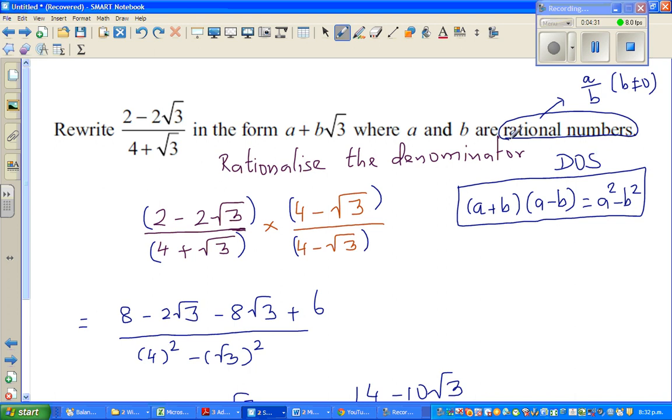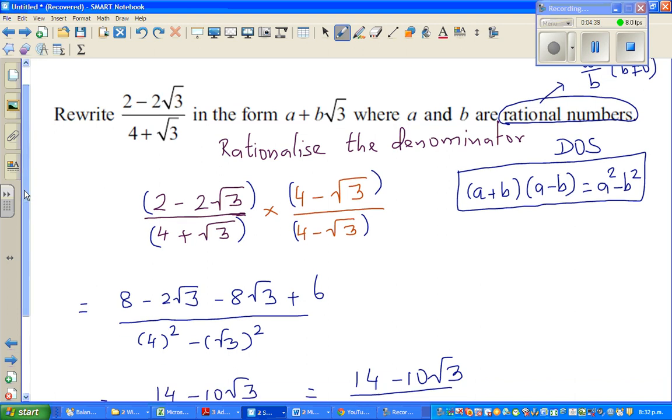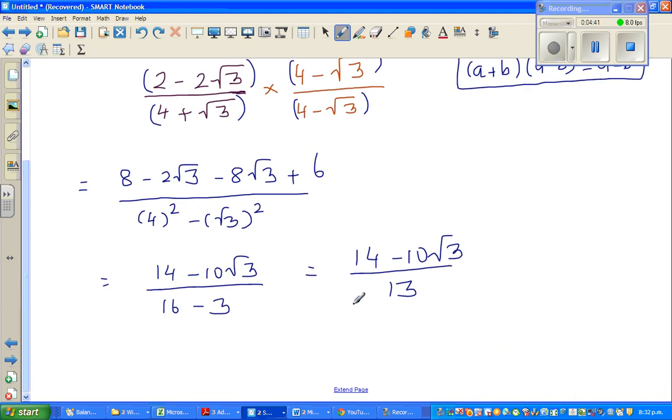Any number, basically not all numbers, there are irrational numbers. All numbers which are not irrational can be written as a numerator and a denominator. So how can I write this? So the next step, I'm going to write this as 14 over 13.